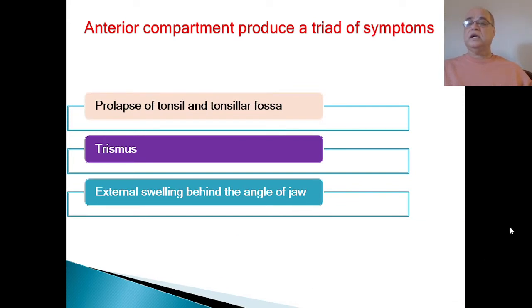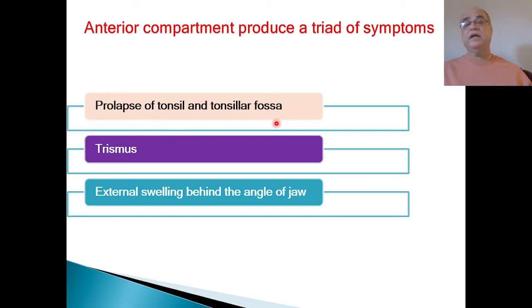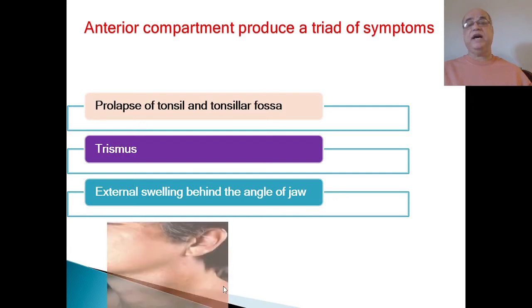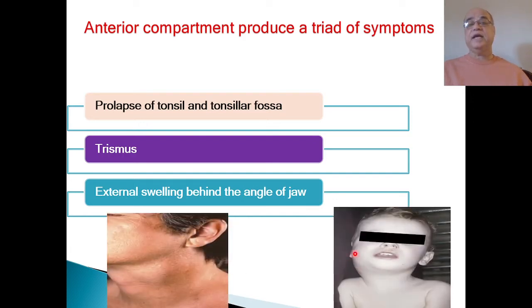Clinical features depend on the compartment involved. In the anterior or pre-styloid compartment, which is related to the tonsillar fossa medially and medial pterygoid muscle laterally, there will be prolapse of the tonsil — meaning the tonsil on the affected side is pushed medially. There will also be trismus and external swelling behind the angle of the jaw in the upper part of the neck. This triad of symptoms is pathognomonic of pre-styloid compartment involvement.